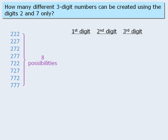Now, for the first digit, we can have either a 2 or a 7. If the first digit is a 2, then the second digit can be either a 2 or a 7. Similarly, if the first digit is a 7, the second digit can be either a 2 or a 7.